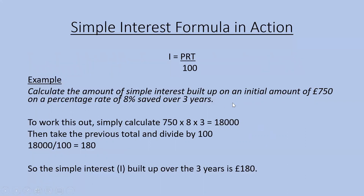I start by multiplying together 750 times 8 times 3. Multiplying all those numbers together gives an answer of 18,000. Then I divide that figure by 100. So 18,000 divided by 100 equals 180. The simple interest built up over the three years is £180.